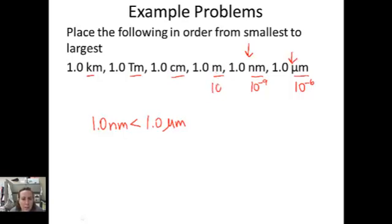This has no prefix, so that's the base unit. Centimeters is 10 to the negative 1. Now, terameters, that's big, very big. 10 to the 12th, that's a trillion. And kilometers here is 10 to the 3rd. So you can just go based on these exponents.